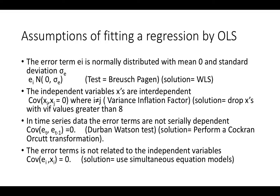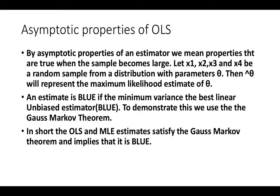The solution to autocorrelation is to perform a Cochrane-Orcutt transformation and then re-estimate the model. The fourth and last assumption is essentially theoretical: it states that the error term should not be related to the independent variables. This concept is largely theoretical, and the solution to this problem is to use simultaneous equation models instead of OLS.